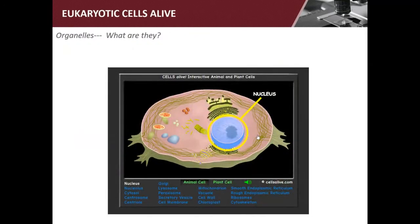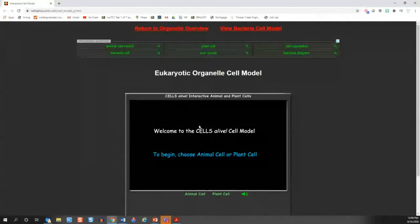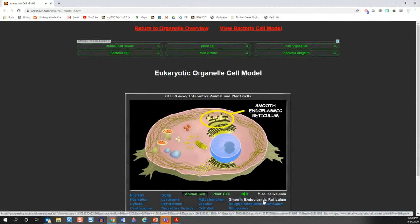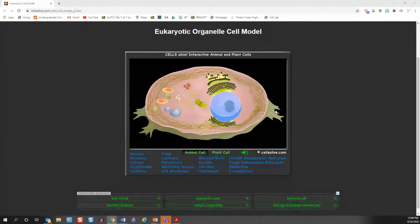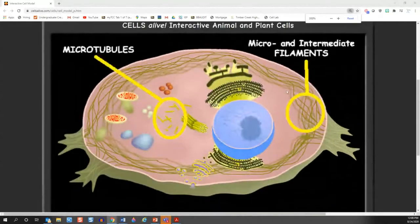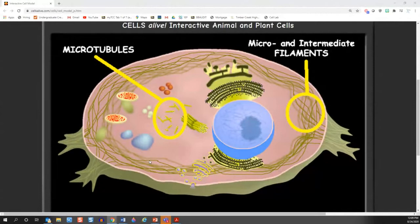So any questions on the difference between prokaryotes and eukaryotes? Now we're going to use this little interactive thing. All you have to do is type 'cells alive' in Google, and it's going to bring you to this cool website. So you would type in 'cells alive' and we're going to first look at an animal cell. You can see that it looks pretty complicated and organized on the inside with all of these different compartments. And when you scroll around, you can actually see the names of some of these compartments.